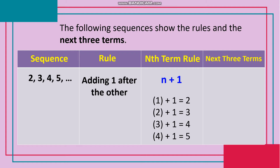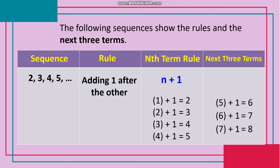To get the next three terms: let n be the 5th term: 5+1=6; 6th term: 6+1=7; 7th term: 7+1=8. Therefore, the next three terms are 6, 7, 8.